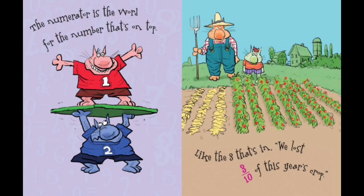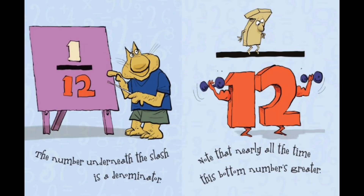The numerator is the word for the number that's on top, like the three that's in 'we lost three tenths of this year's crop.' The number underneath the slash is a denominator. Note that nearly all the time, this bottom number is greater.